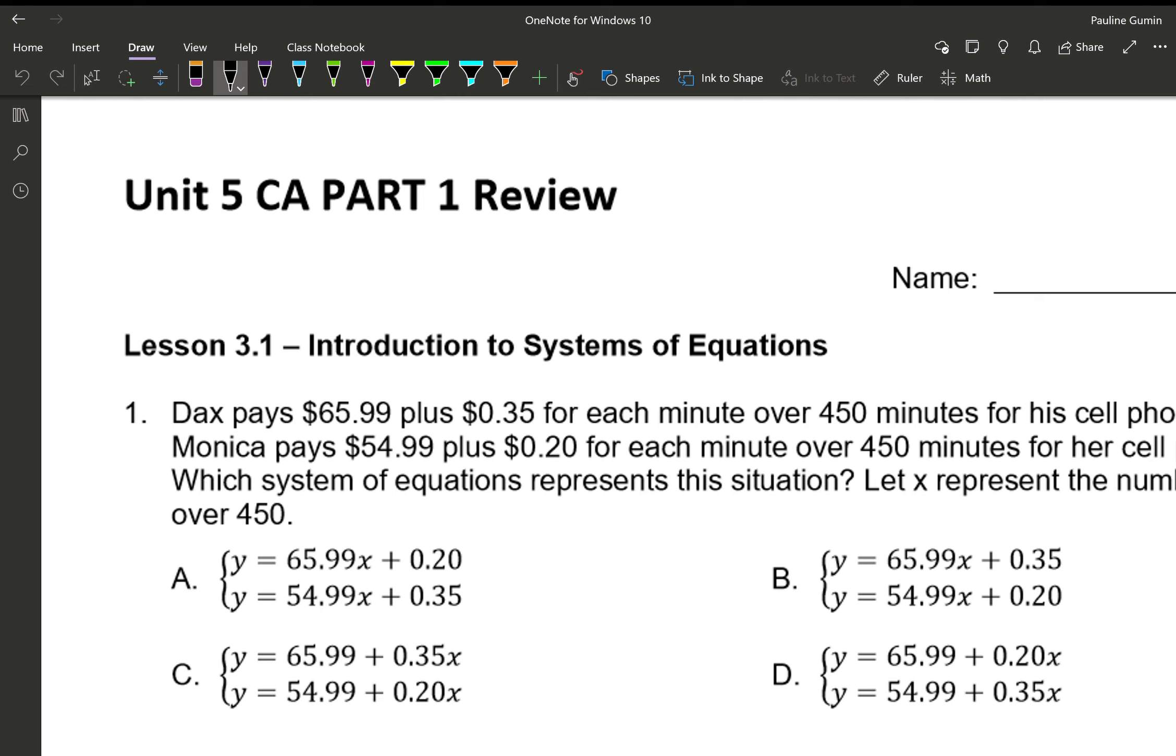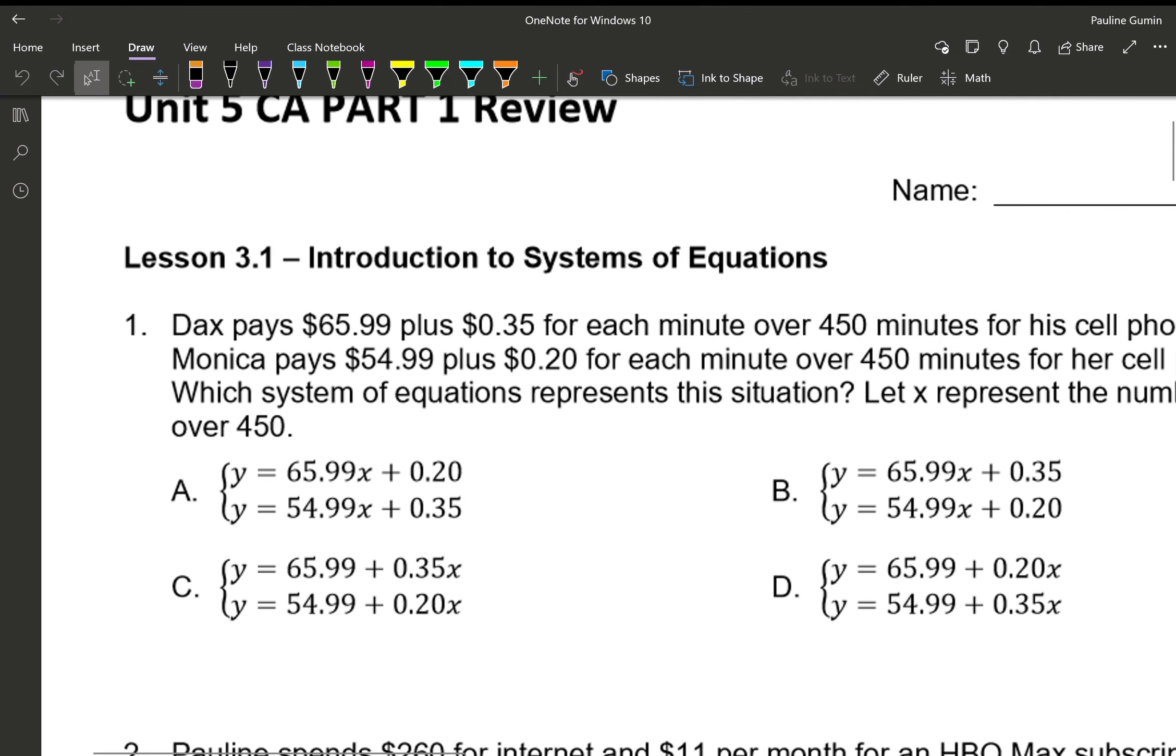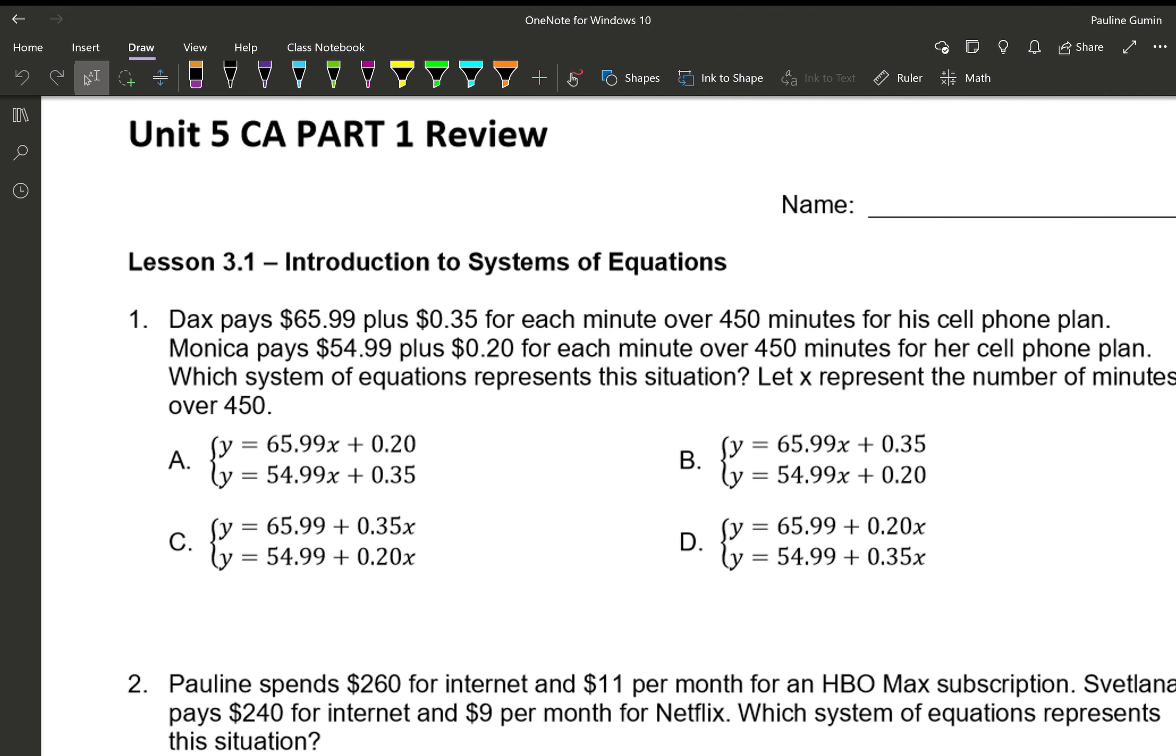Hello and welcome to the Unit 5 CA, so Unit 5 Test Part 1 Review. Dax pays $65 plus 35 cents for each minute over $450 for his cell phone plan. Monica pays $54.99 plus 20 cents for each minute over $450. Which system of equations represent the situation?